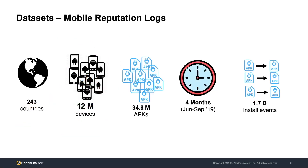At the core of our study are reputation logs that capture the presence of 34 million APKs and their who-installs-who relationships on 12 million Android devices for 4 months from June to September 2019. A very important part of our dataset is the installation events that capture the parent-child relationships as extracted by the operating system API, specifically the Android package installer, which allows us to obtain the name of the parent package for each installed APK. In this talk, the terms parent and installer are interchangeable.